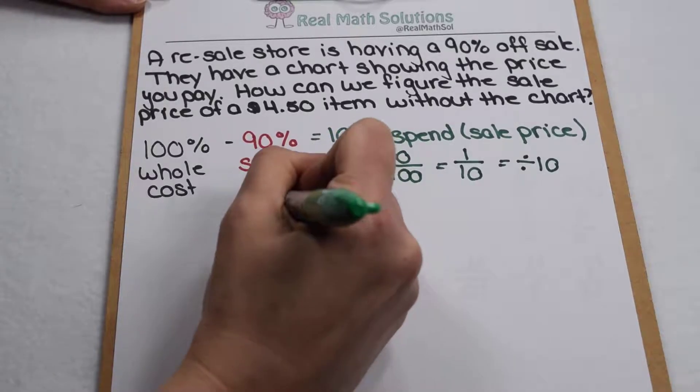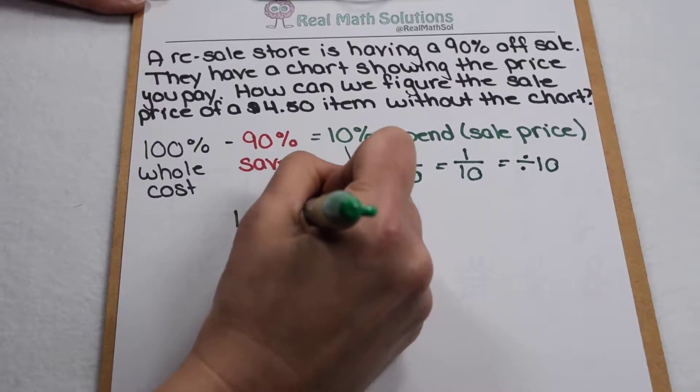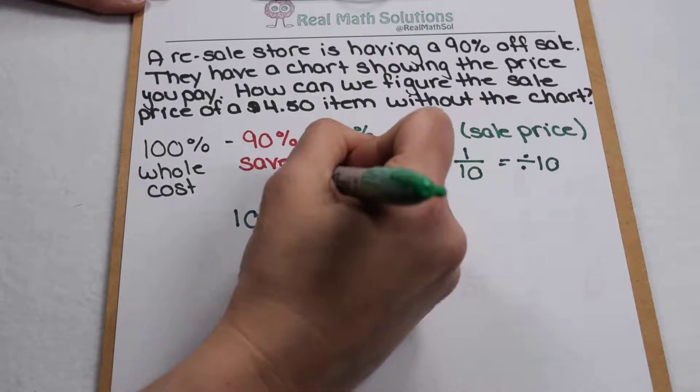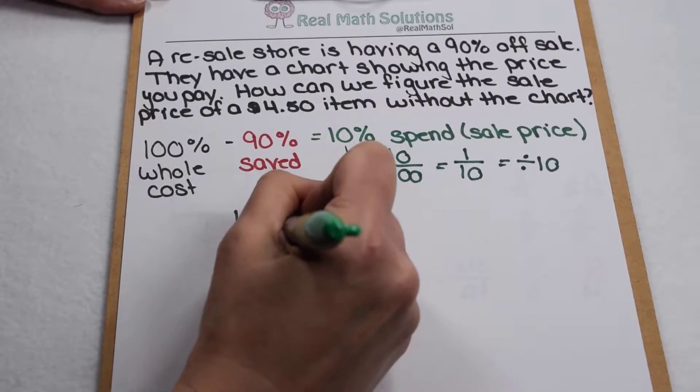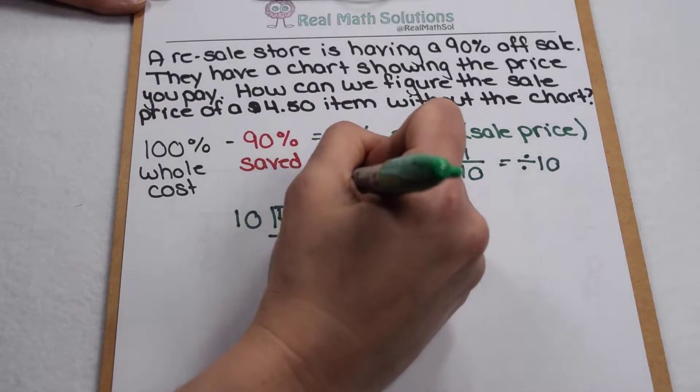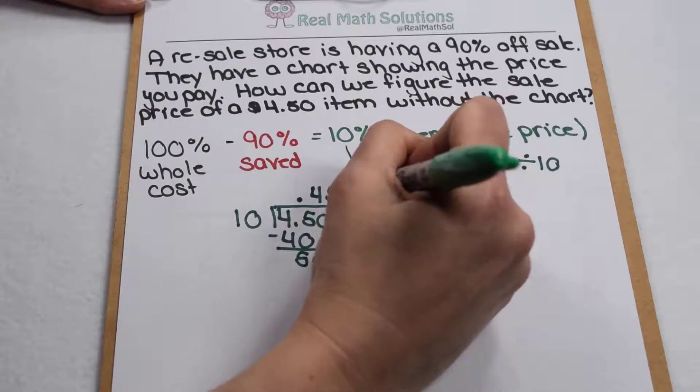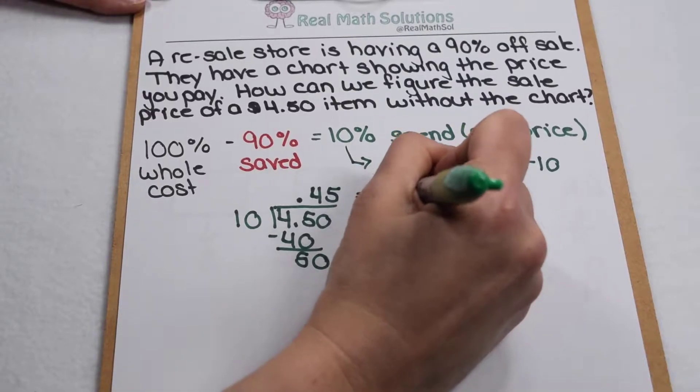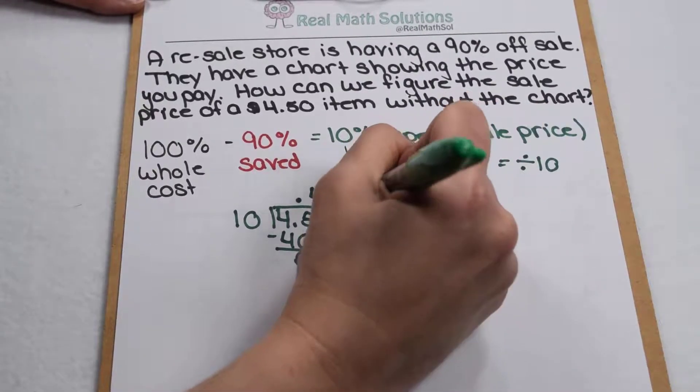We're going to do $4.50 divided by 10. Move my decimal place up into my quotient. 10 goes into 45 four times. Continue on with my dividing. 10 goes into 50 five times. So that means my sale price is going to be 45 cents.